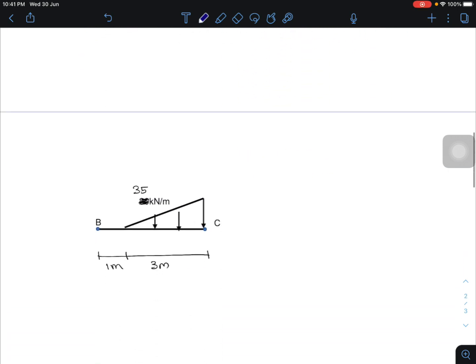Now we move to this member. So PB, I consider this one become PB prime and this one is PC. So moment at B prime equals 0 equals 1 over 2 times 35 times 3 meter, and then 2 third of 3 meter plus 1 minus PC times 4. So PC is 39.375 kN.